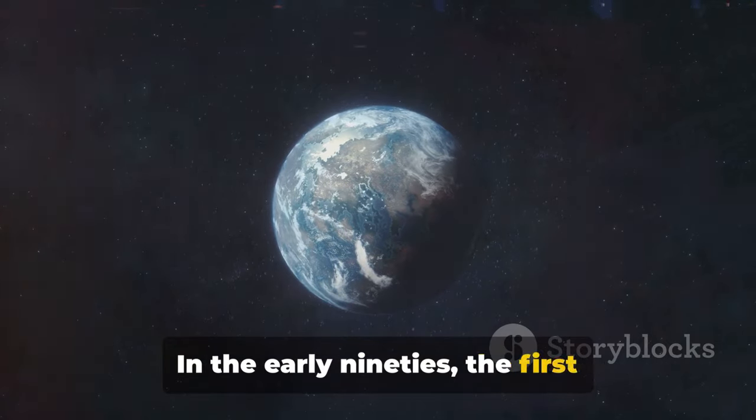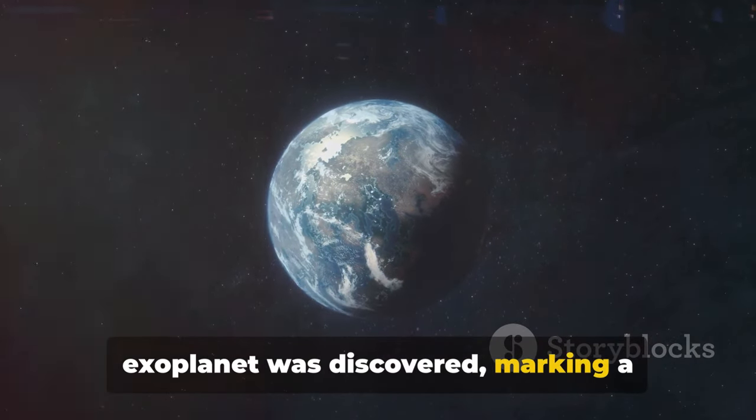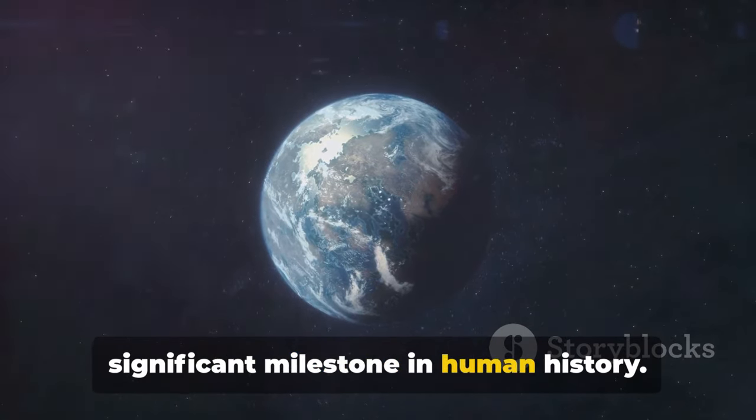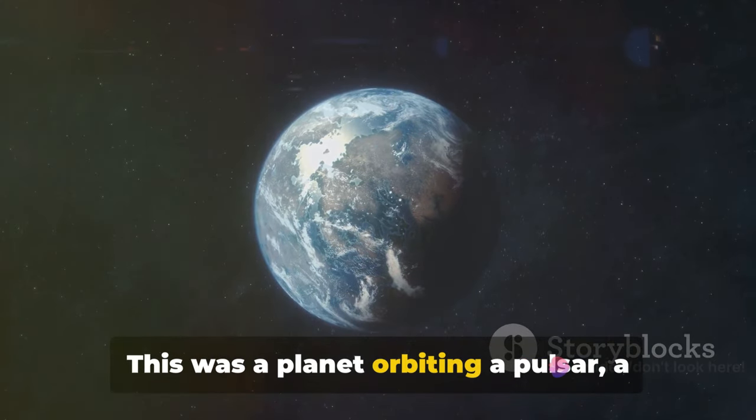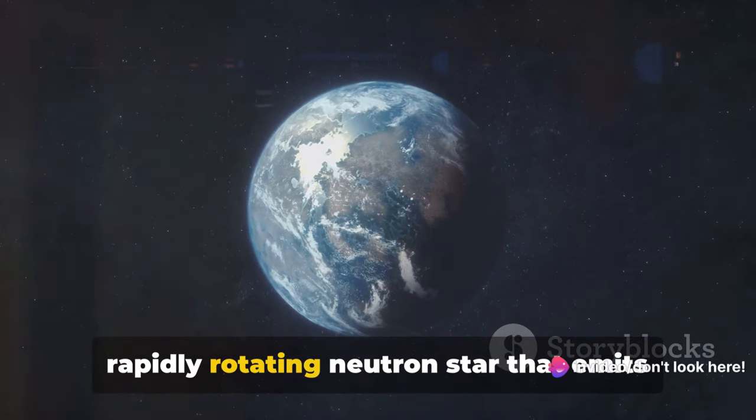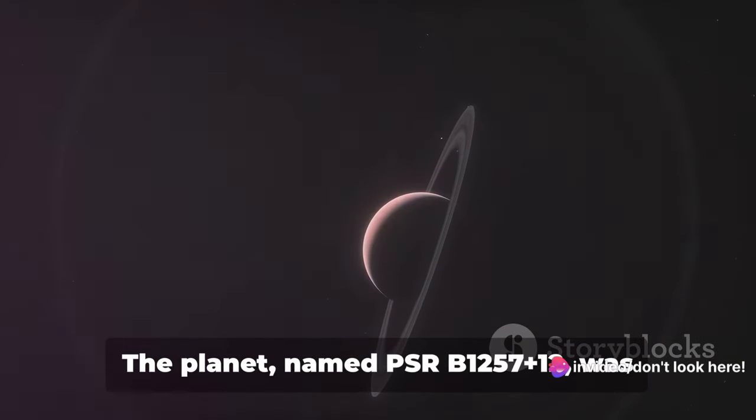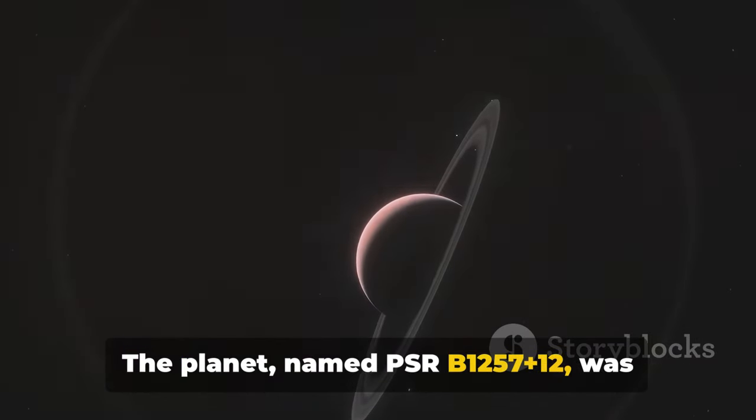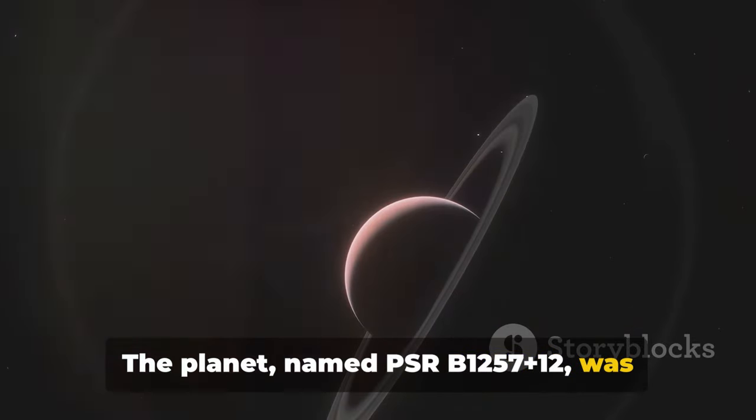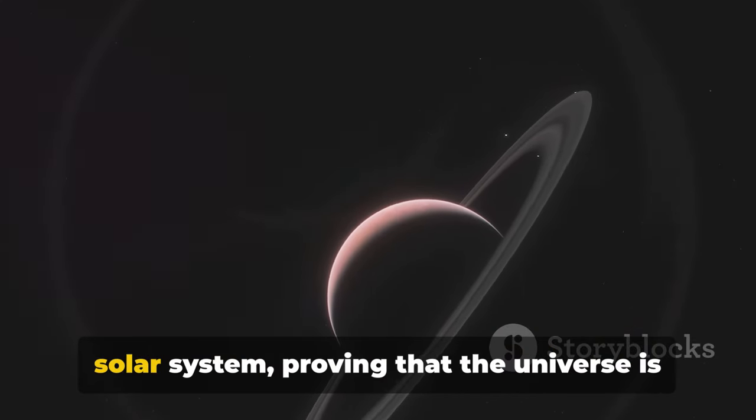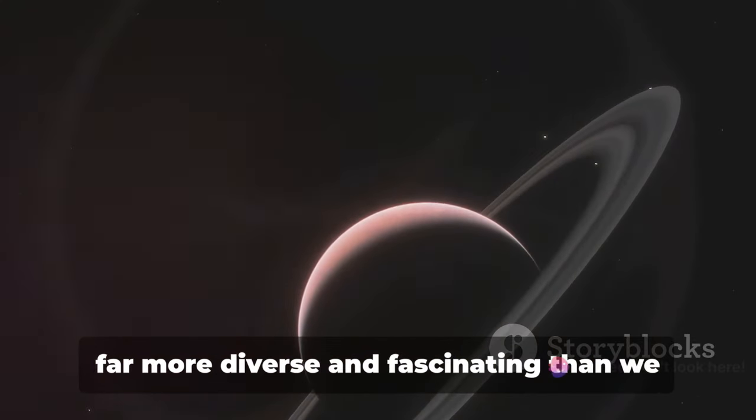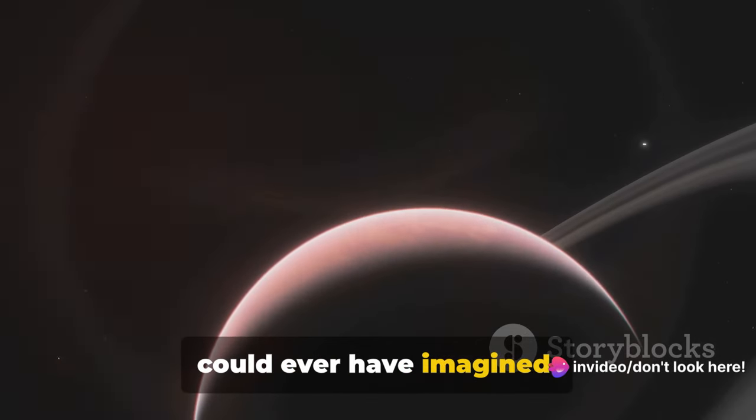In the early 90s, the first exoplanet was discovered, marking a significant milestone in human history. This was a planet orbiting a pulsar, a rapidly rotating neutron star that emits regular pulses of radiation. The planet, named PSR B257 plus 12, was unlike anything we've seen in our own solar system, proving that the universe is far more diverse and fascinating than we could ever have imagined.